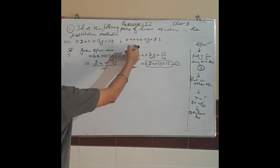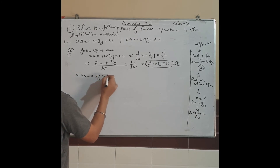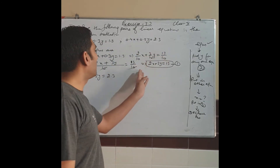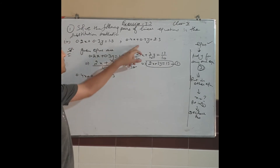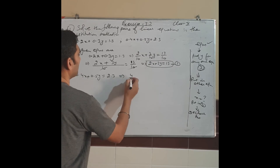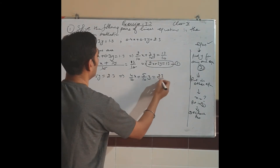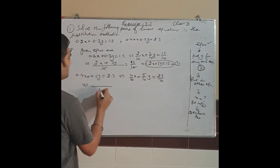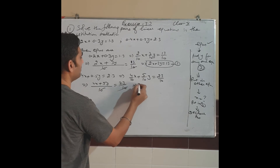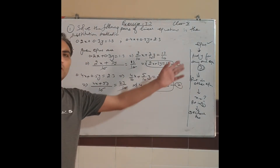Similarly, for equation 2: 0.4x + 0.5y = 2.3. Write as 4/10 x + 5/10 y = 23/10. Take LCM — it is 10. This gives 4x + 5y = 23. Give it number 2.